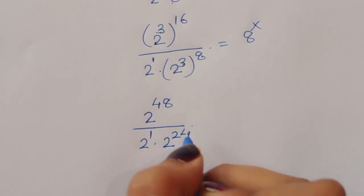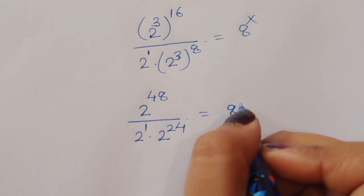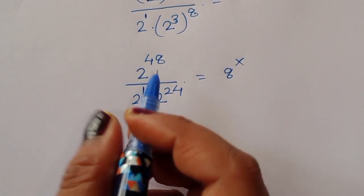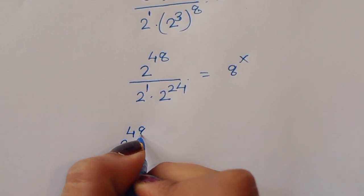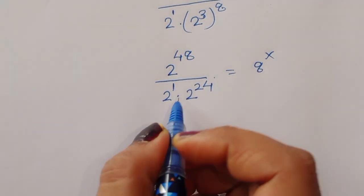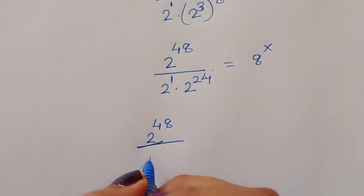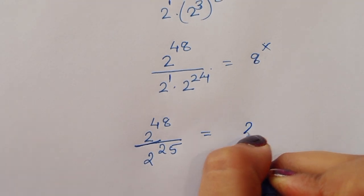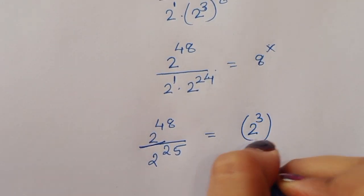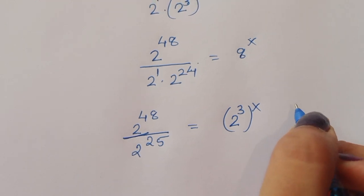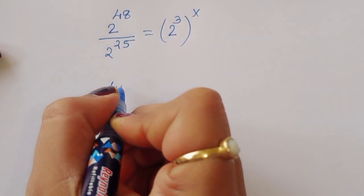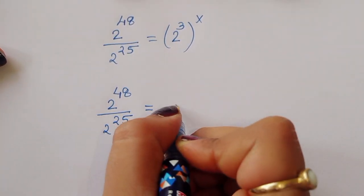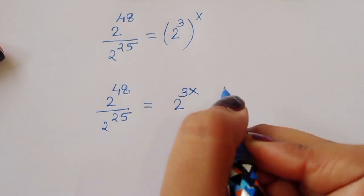So the denominator becomes 2 power 24 plus 1, which is 2 power 25. Now 8 power x can be written as 2 power 3 to the power x, that is 2 power 3x. So we have 2 power 48 divided by 2 power 25 is equal to 2 power 3x.